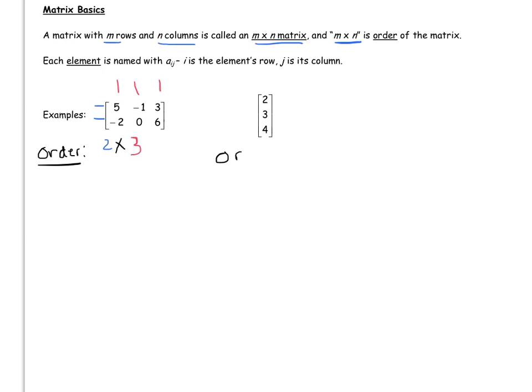Over here, the order would be, well we have three rows and one column, and so its order would be a 3 by 1.